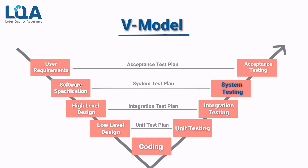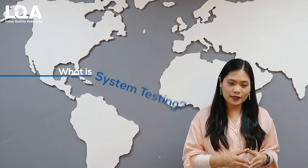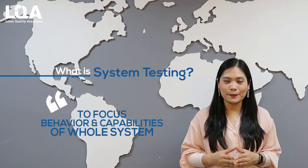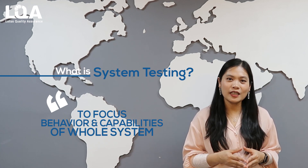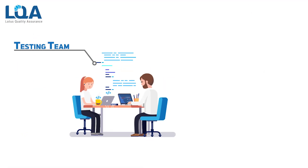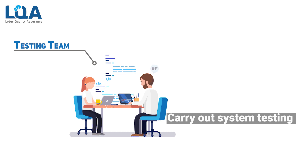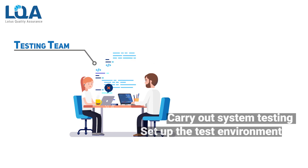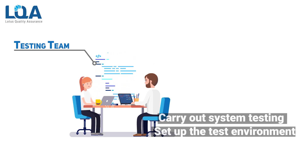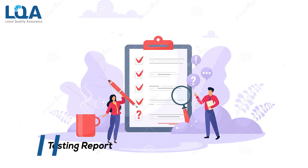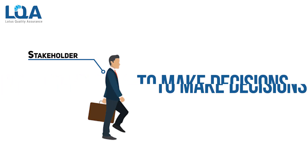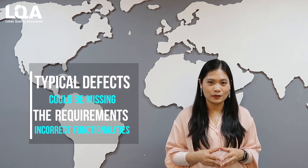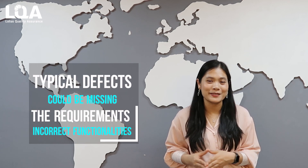The next step is system testing. System testing focuses on the behavior and capabilities of the whole system and whole product, as experienced by end-to-end users. Independent testing teams typically carry out system testing and will set up a testing environment very similar to the production one. They produce a testing report which stakeholders use to make the release decision. Typical defects include missing requirements or incorrect functionalities of the system.